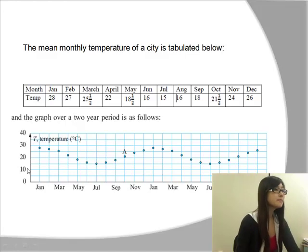Represented here in the graph, we have a mean monthly temperature of some city. And the data is written on this table of values right here.